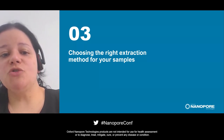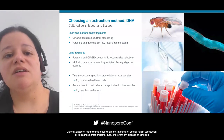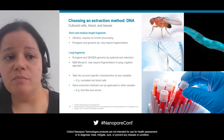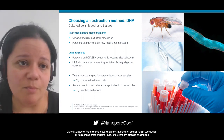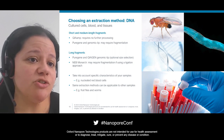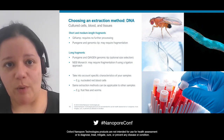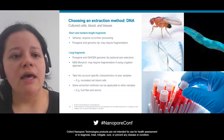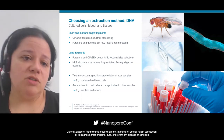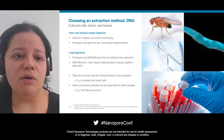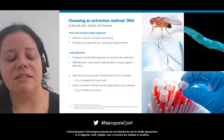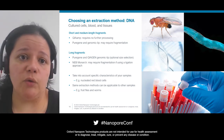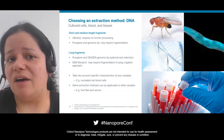Now let's go into choosing the right extraction method depending on what you have, starting with DNA. For cultured cells, blood, and tissues, you need to think first about the type of fragments you want to generate. If you are looking for short or medium fragments, the QIAMP kits — which are spin-column based — will shear the sample a little, so you typically won't require any further processing.